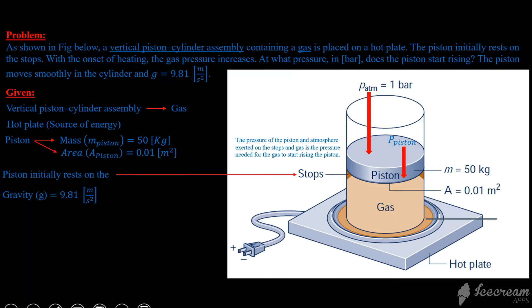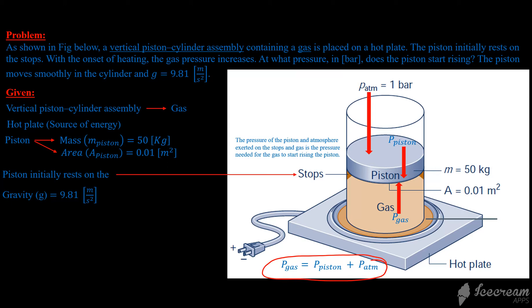The pressure of the piston and the atmosphere exerted on the stops and the gas is the pressure needed for the gas to start rising the piston. When the hot plate gives energy to the gas, it increases its pressure. To find the required pressure for the piston to start moving, we use the equation: pressure of gas equals pressure of piston plus atmospheric pressure.